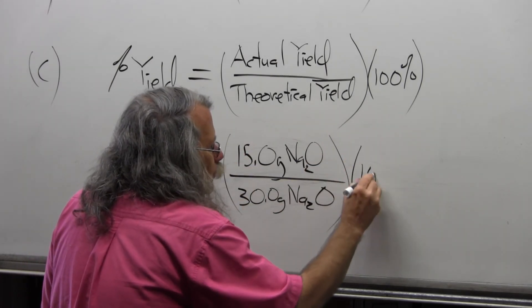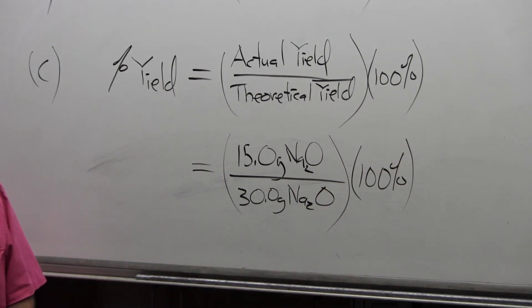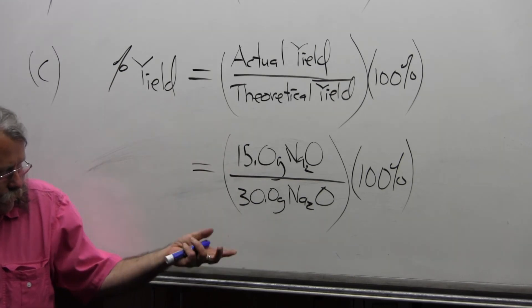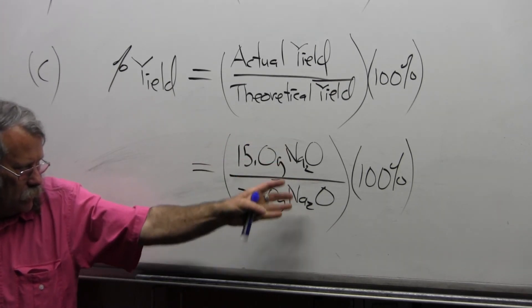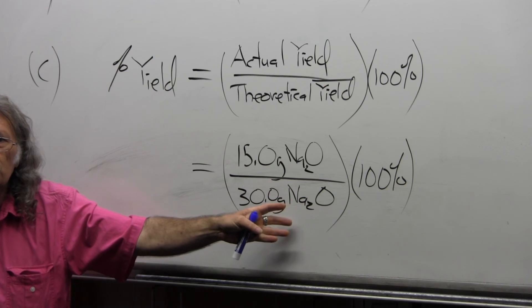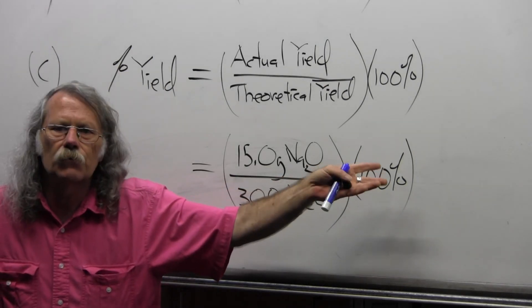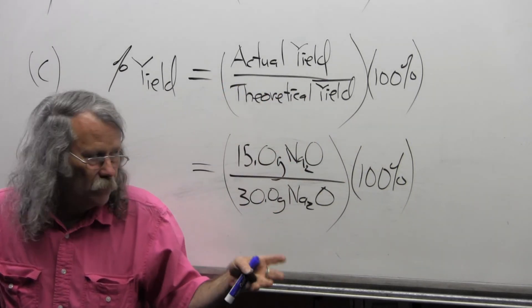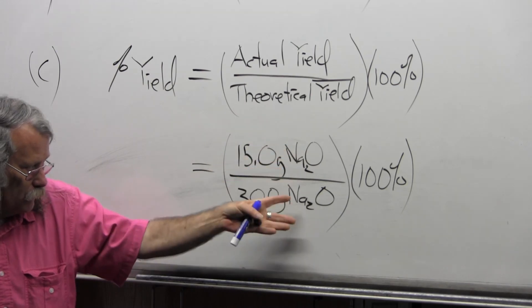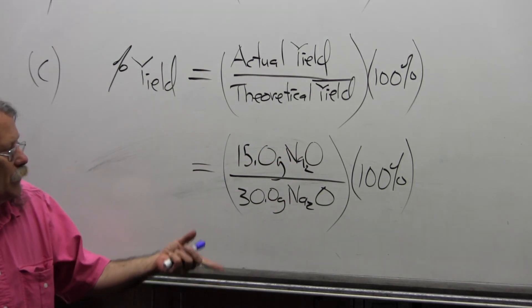And that's going to be times 100%. Now this expression, the units cancel. I can't have any sort of weird units, and I'm asking what is the percent yield. Notice that the grams of sodium oxide cancel, so it's a very straightforward calculation.